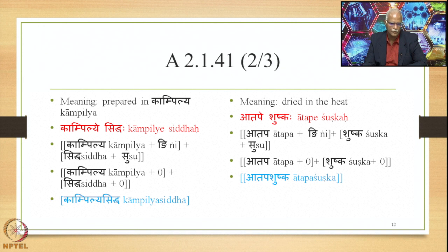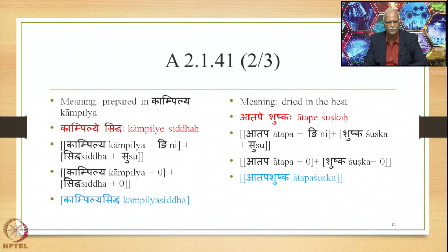For the first example, the meaning to be conveyed is 'prepared in Kampilya' — Kampilya is the name of a city. The Alaukika Vigraha is Kampilya plus Nghi plus Siddha plus Su. This becomes a Samasa and therefore a Pratipadika. Nghi and Su, now part of the Pratipadika, are deleted by Supodhatup Pratipadika Yoho, giving Kampilya plus 0 plus Siddha plus 0. We join the words together and get the compound Kampilya Siddha, denoting the same meaning as Kampilye Siddha.